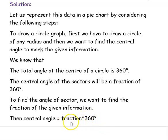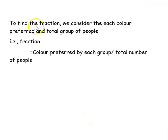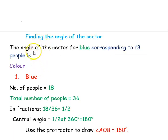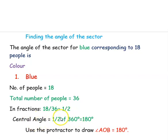To find the central angle, first we want to find the fraction of the given information. The fraction formula is part by whole. For this given information, we write it as color preferred by each group of people divided by the total number of people. The first color is blue, corresponding to 18 people. The fraction of blue color preferred people is 18 divided by 36, that is 1 divided by 2. The central angle is 1 by 2 of 360 degrees, which is 180 degrees.